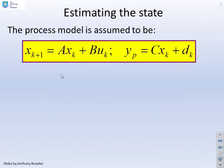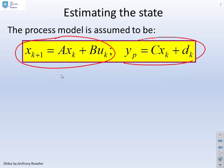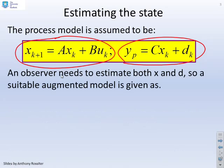The process model is assumed to be something like this, so a standard state-based model X equals AX plus BU, Y equals CX plus D, so D is an output disturbance model. An observer is needed to estimate both X and D.